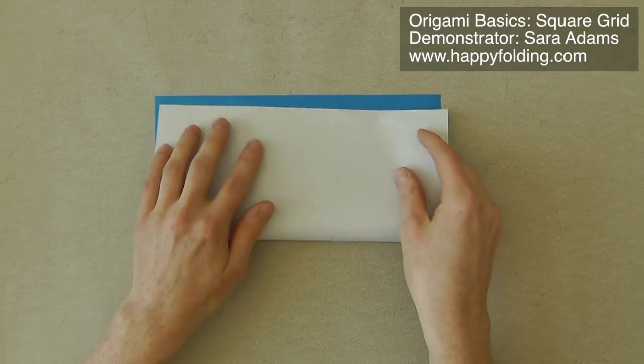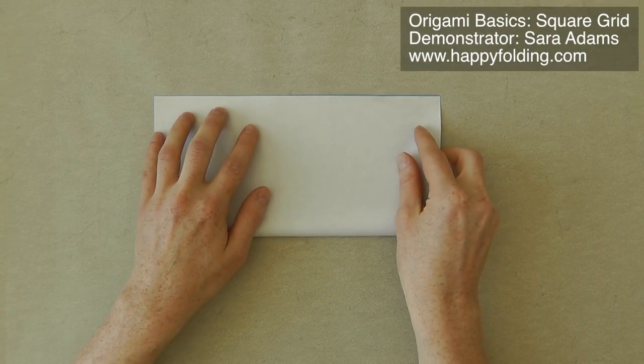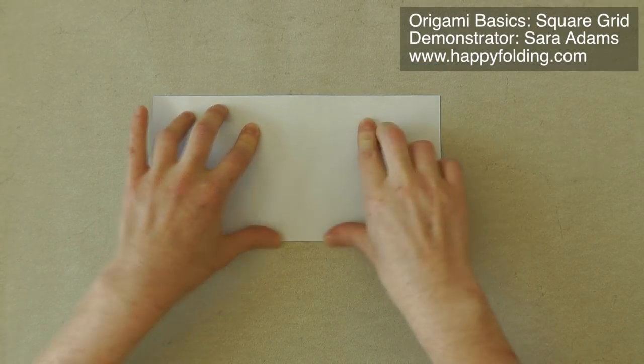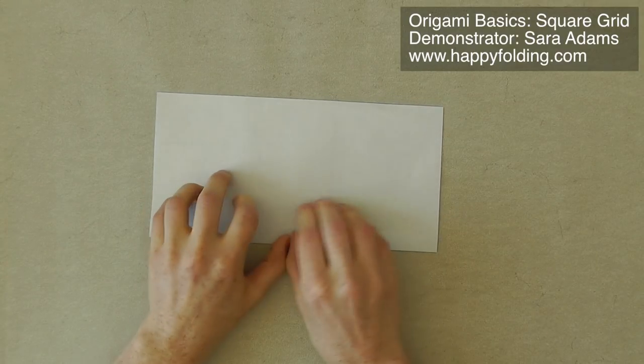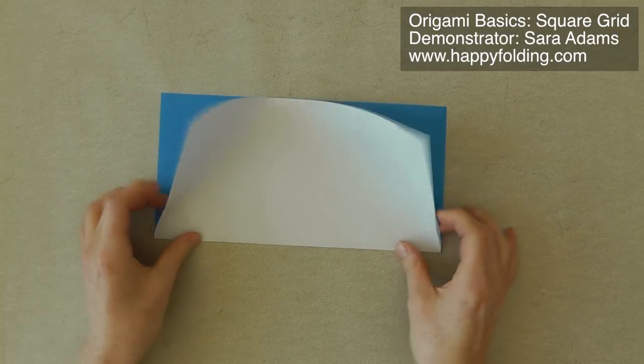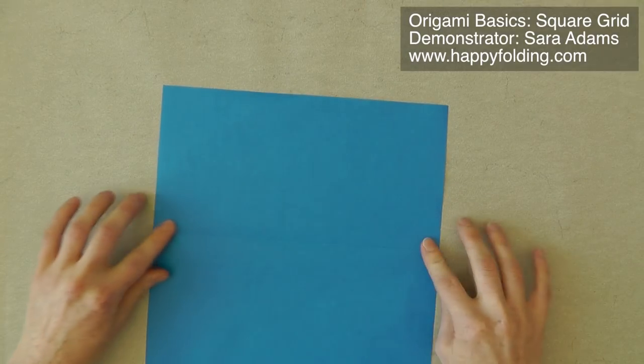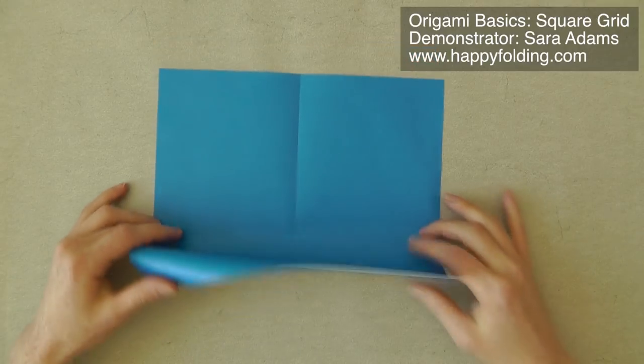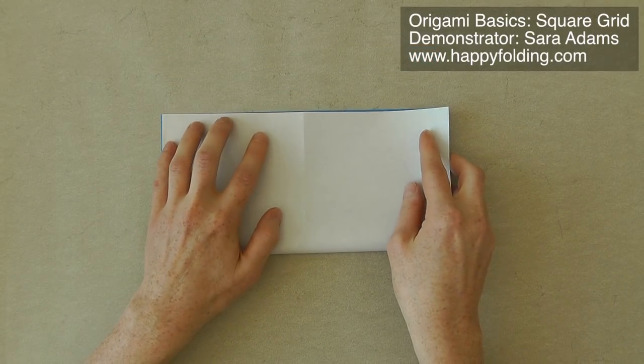So that's the first tip. I always do valley folds on the color side or the dominant side of the tessellation. And then make a strong crease, unfold, and rotate, and crease the other way around too.